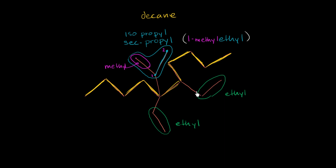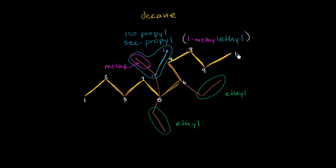The way this is done is that you start counting from the end of your main decane backbone, and you count from the end that bumps into the most groups faster. If you count from this end, this would be the 1, 2, 3, 4, 5-carbon — on the 5-carbon we bump into two groups. If we started over here, this would be the 1, 2, 3, 4, 5-carbon — on the 5-carbon we bump into only one group, and we'd have to wait until the 6-carbon to bump into two groups. So we get to the two groups faster starting from this end: 1, 2, 3, 4, 5, 6, 7, 8, 9, 10.